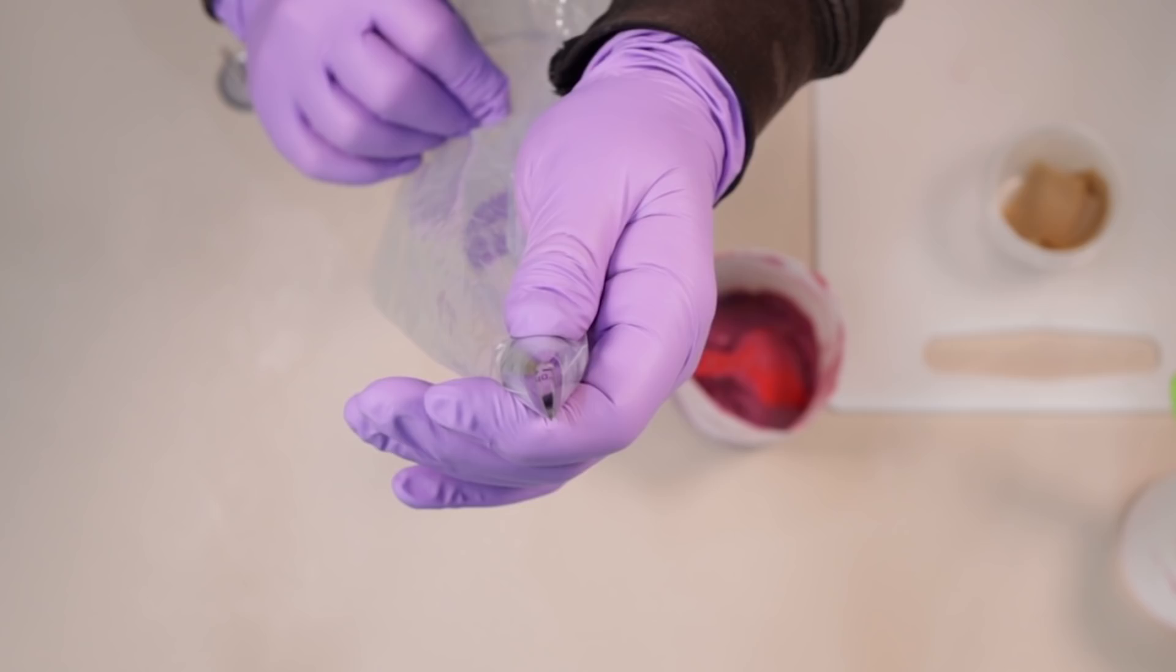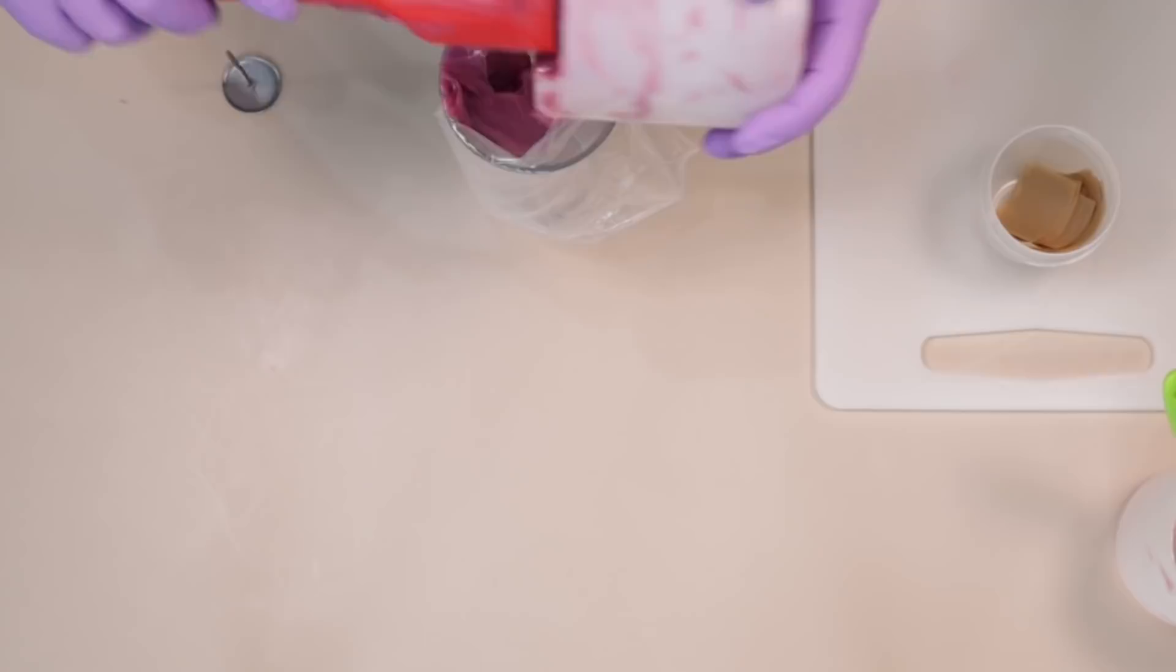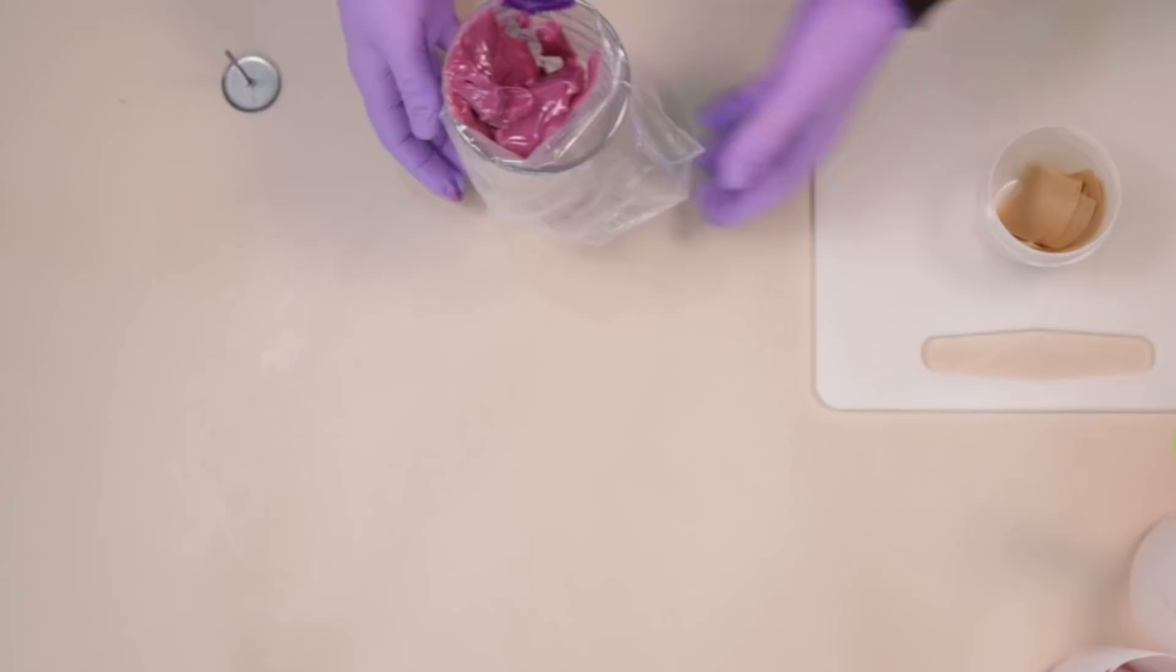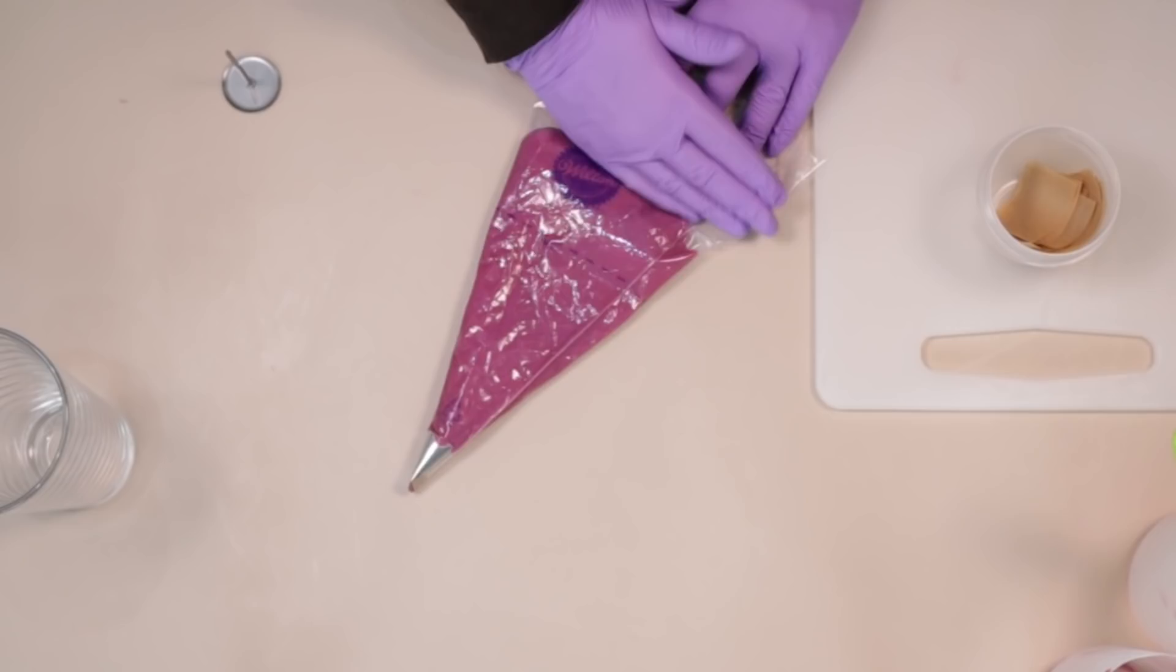I'm using a Wilton 103 piping tip and just stretching my bag over a glass to make it easier to fill. Now this piping bag is technically one of those disposable piping bags, but remember, just because something says disposable, it doesn't mean you have to dispose of it every single time. I just use my piping bags again and again and again until they wear out.